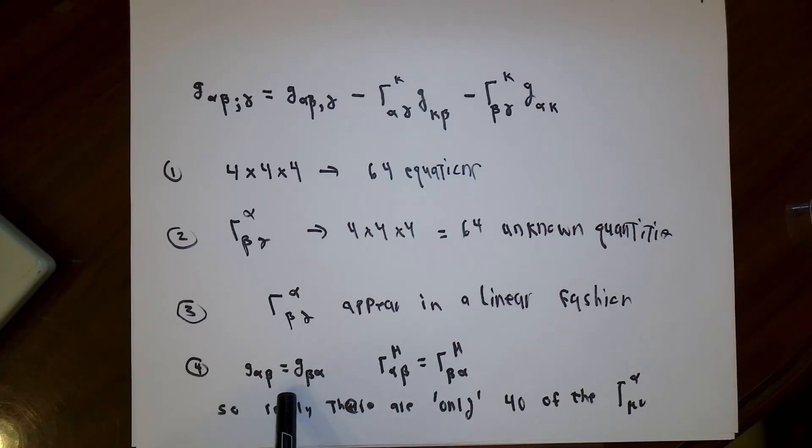Also, the metric tensor here is a symmetric tensor. G_αβ is the same as G_βα. And lastly, we figured out that if we're using a coordinate basis, the Christoffel symbols are symmetric in the lower two indexes. So if you take this into account, there's not really 64 equations with 64 variables, there's only 40 equations with 40 variables.